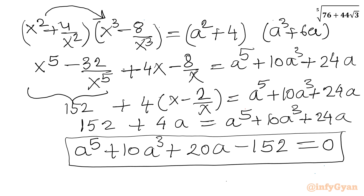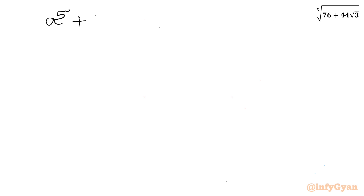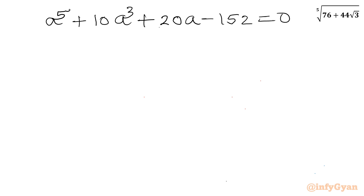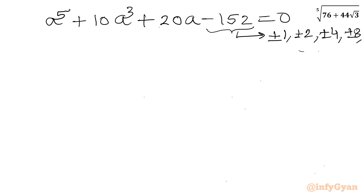This is our quintic equation. I will use the synthetic division method and rational root theorem to solve this. The equation is a power 5 plus 10a cubed plus 20a minus 152 equals 0. The eligible factors of the constant term minus 152 include plus or minus 1, plus or minus 2, plus or minus 4, plus or minus 8, and so on. The leading coefficient gives only plus or minus 1.